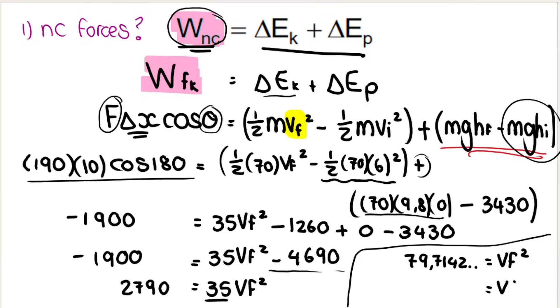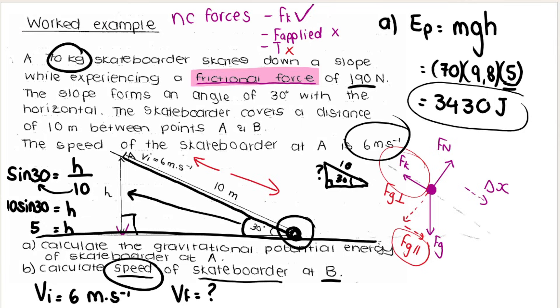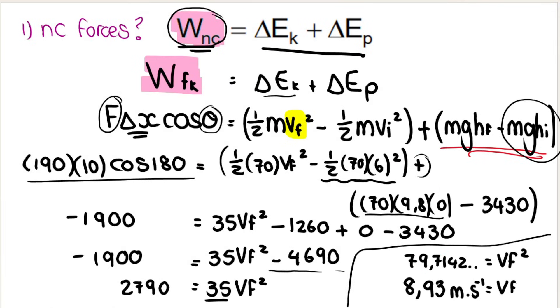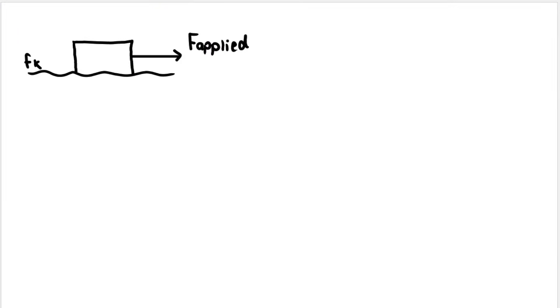And then my final step is to square root the 79 comma comma. Remember, don't round off till the end. My final velocity, final speed, 8 comma 9, 3 meters per second. Because the question wanted speed, they wanted the speed at B. Speed, I don't need a direction. If it said velocity at B, then I would say 8 comma 9, 3 meters per second down the slope. I hope that makes sense.